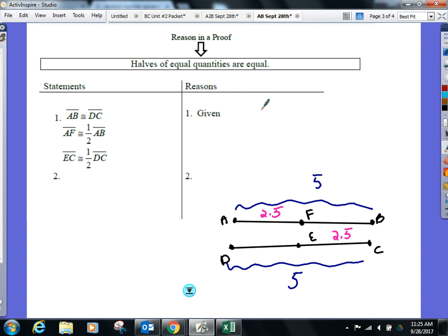What did you know about AB and DC? What were you told about AB and DC? They're congruent. So if I take two segments, two angles that are congruent, what will I know about their halves? They're also equal to each other. That's what we just proved. So if I take two equal quantities, take half of it, those halves will also be equal to each other. We're good?